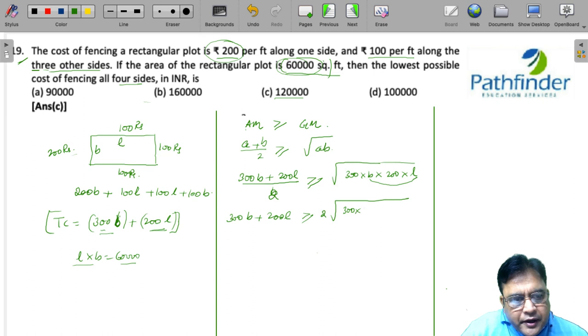So, you have 300 into 200 into 60,000 and multiplied by 2. If you look here, the product of 300 and 200 is also 60,000.